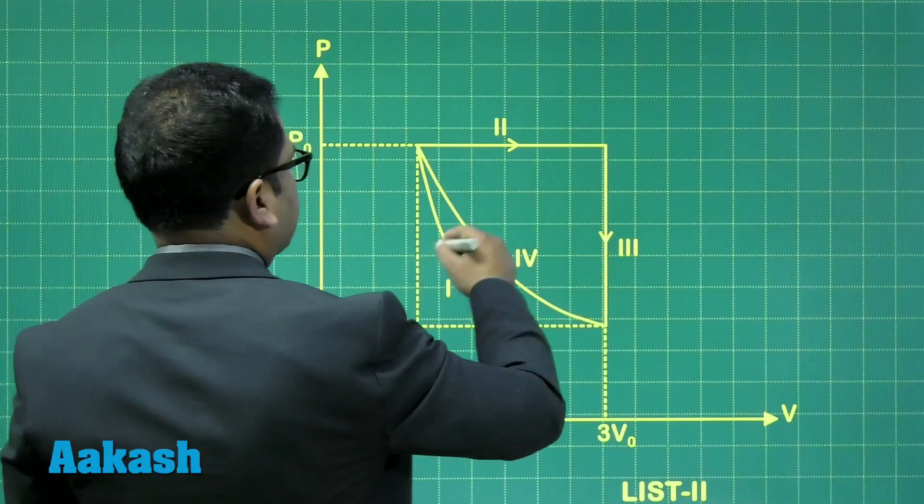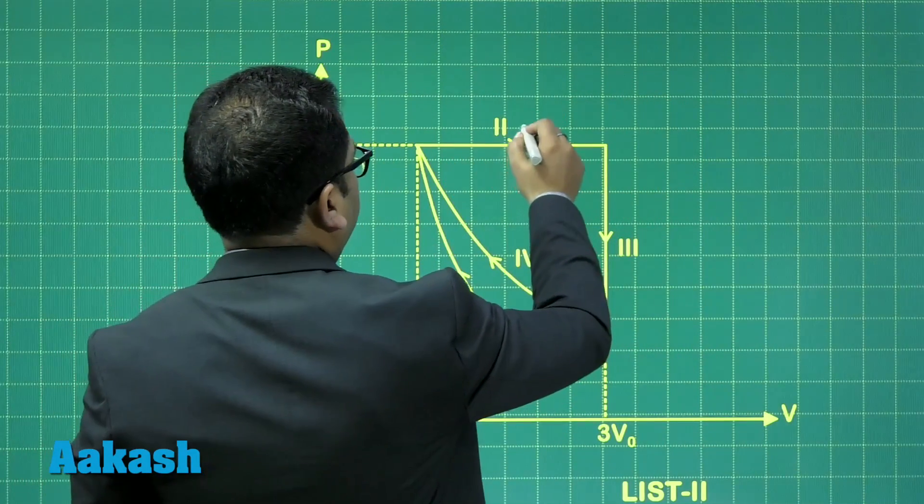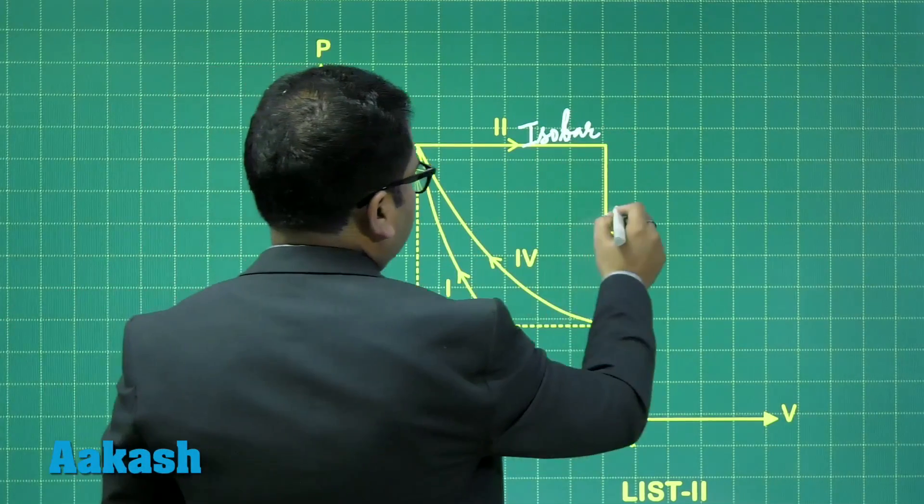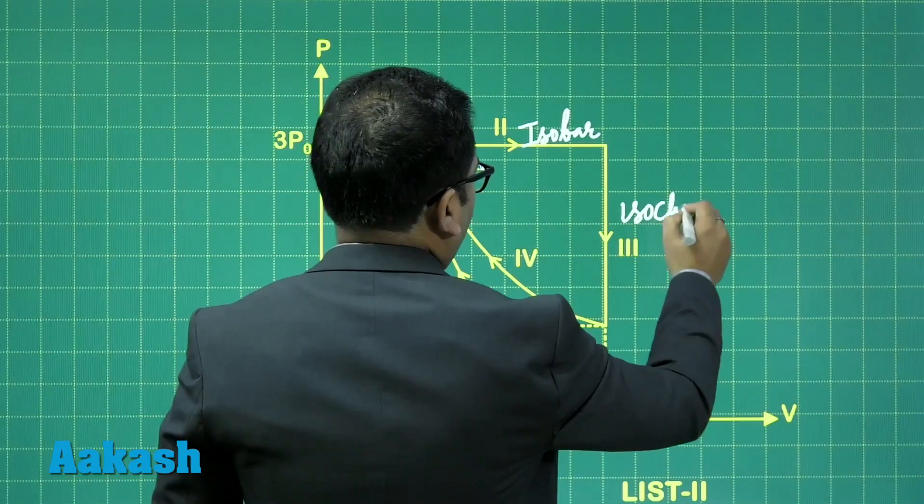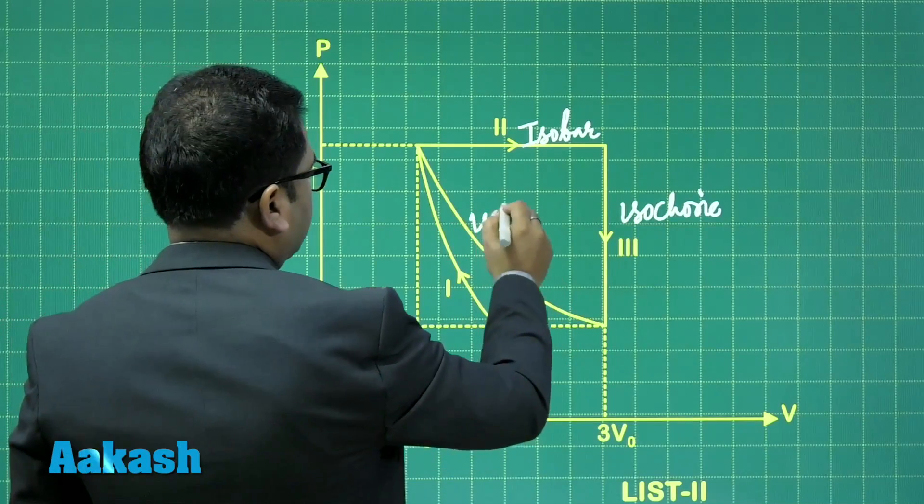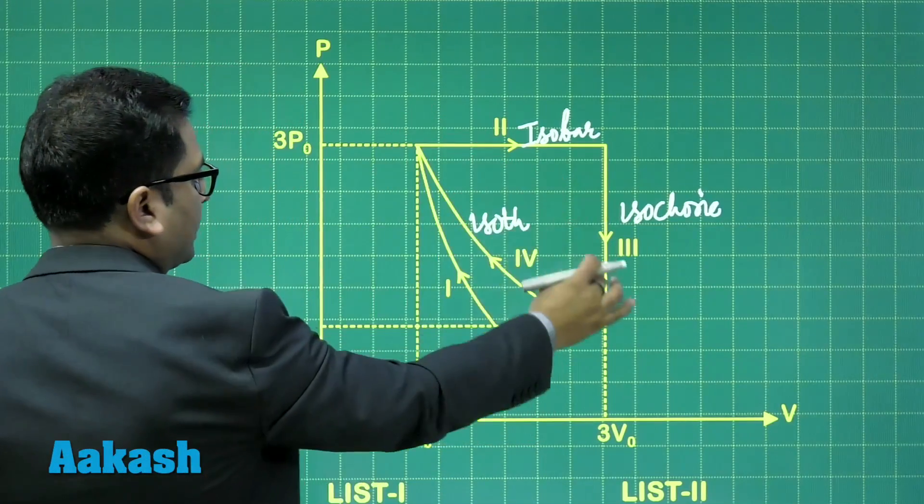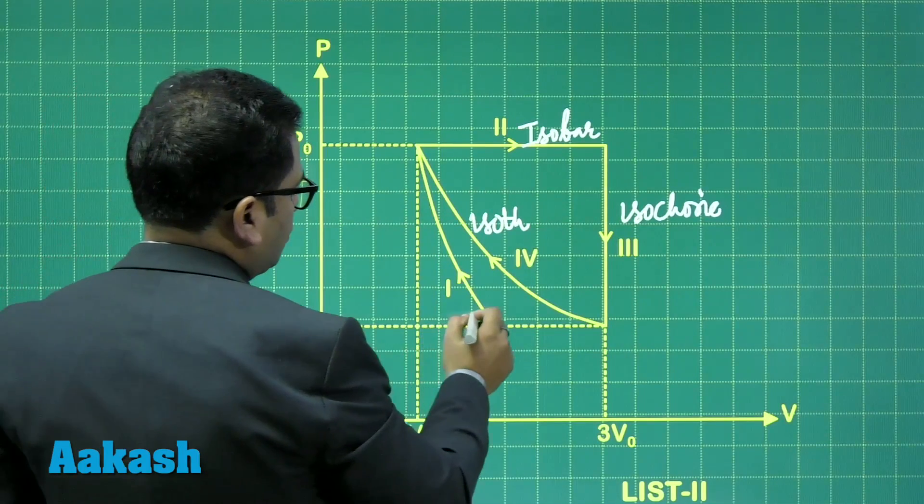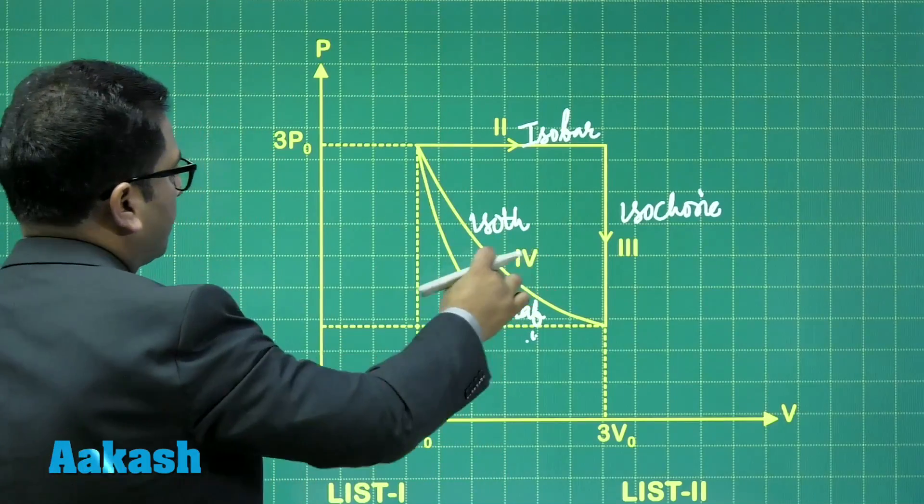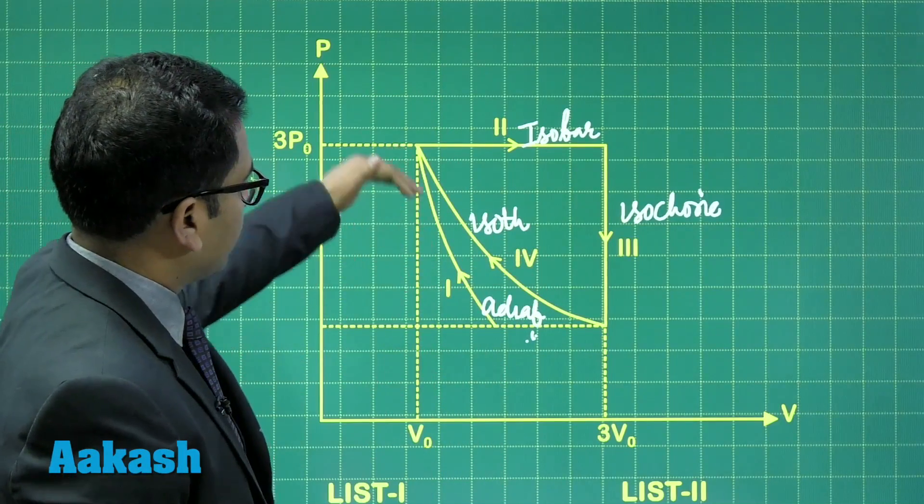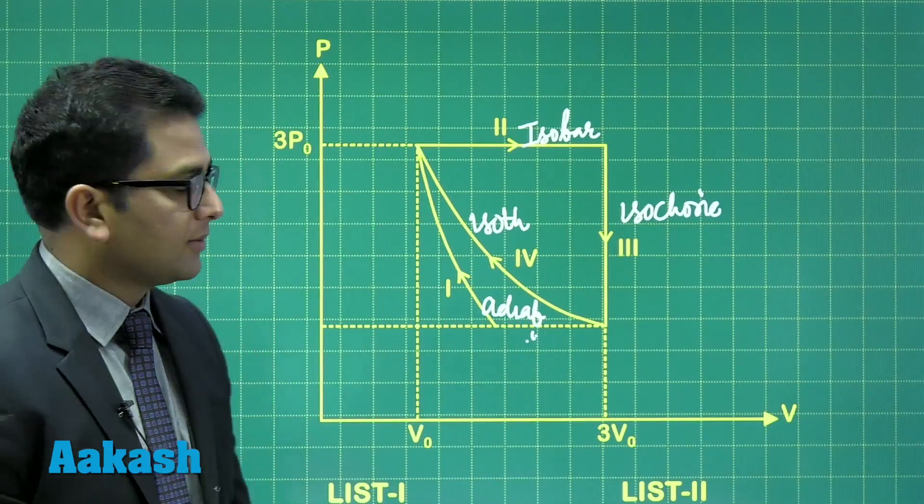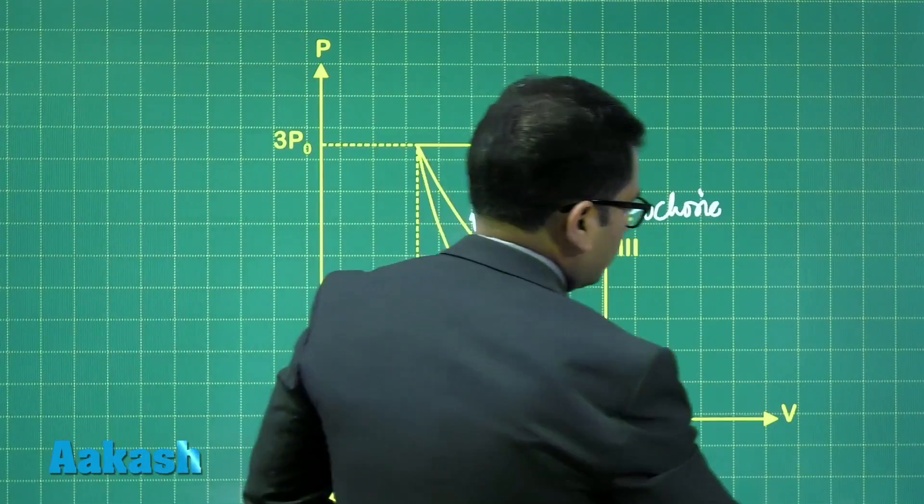We need to identify which process is which. Process 2 is isobaric, process 3 is isochoric. Between 4 and 1, process 4 is isothermal because P1V1 = P2V2, and process 1 is adiabatic. The slope magnitude for adiabatic is greater than isothermal, confirming our identification.